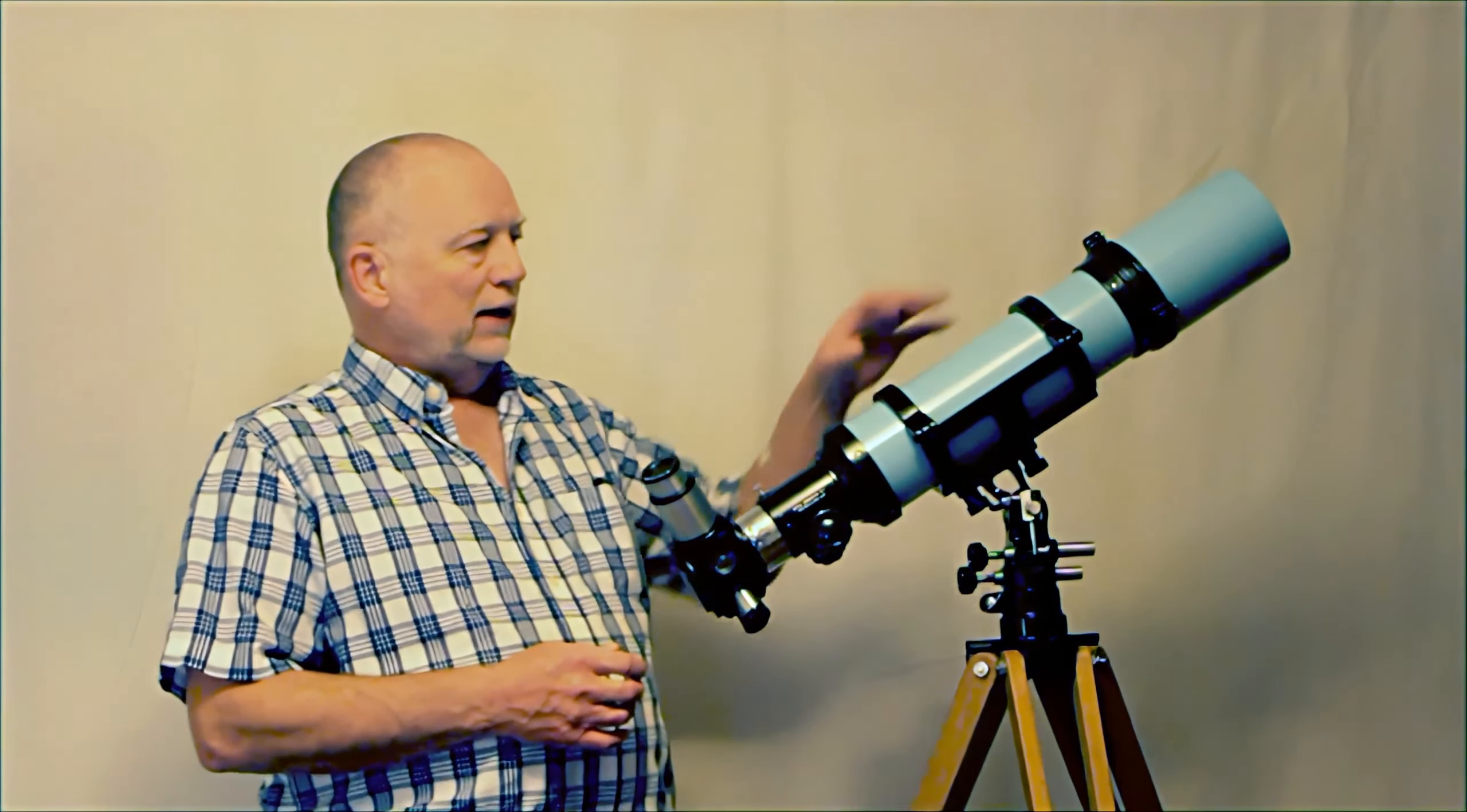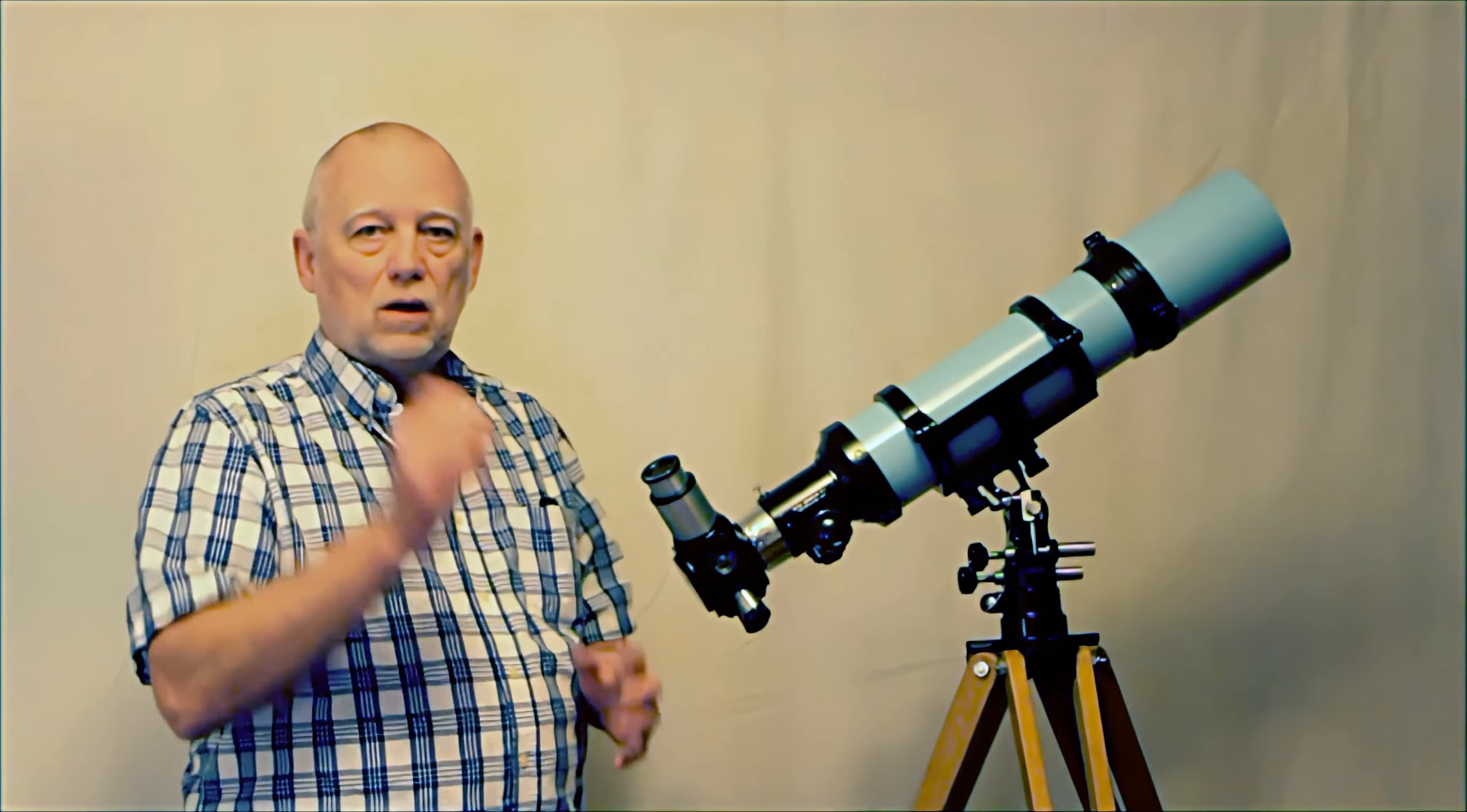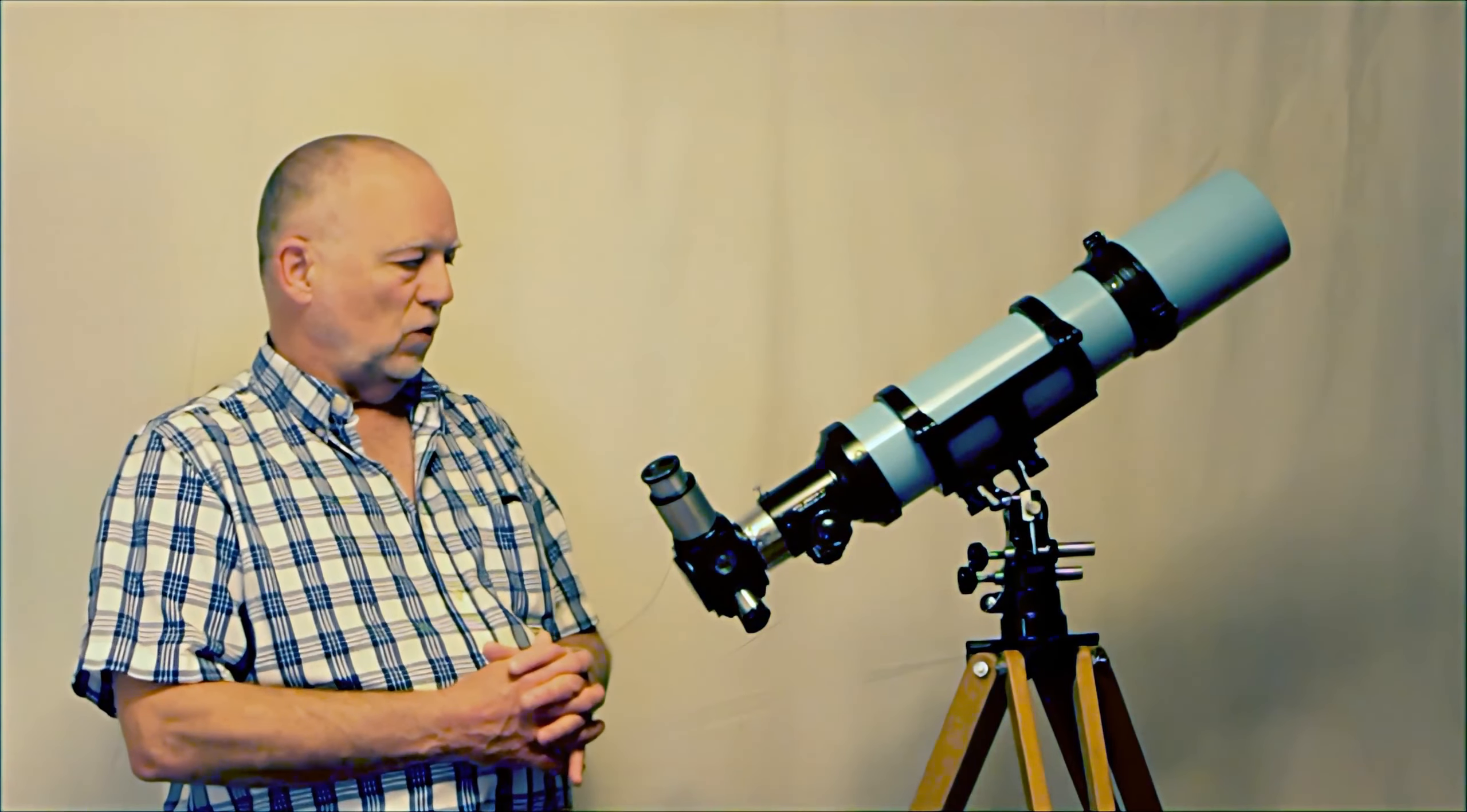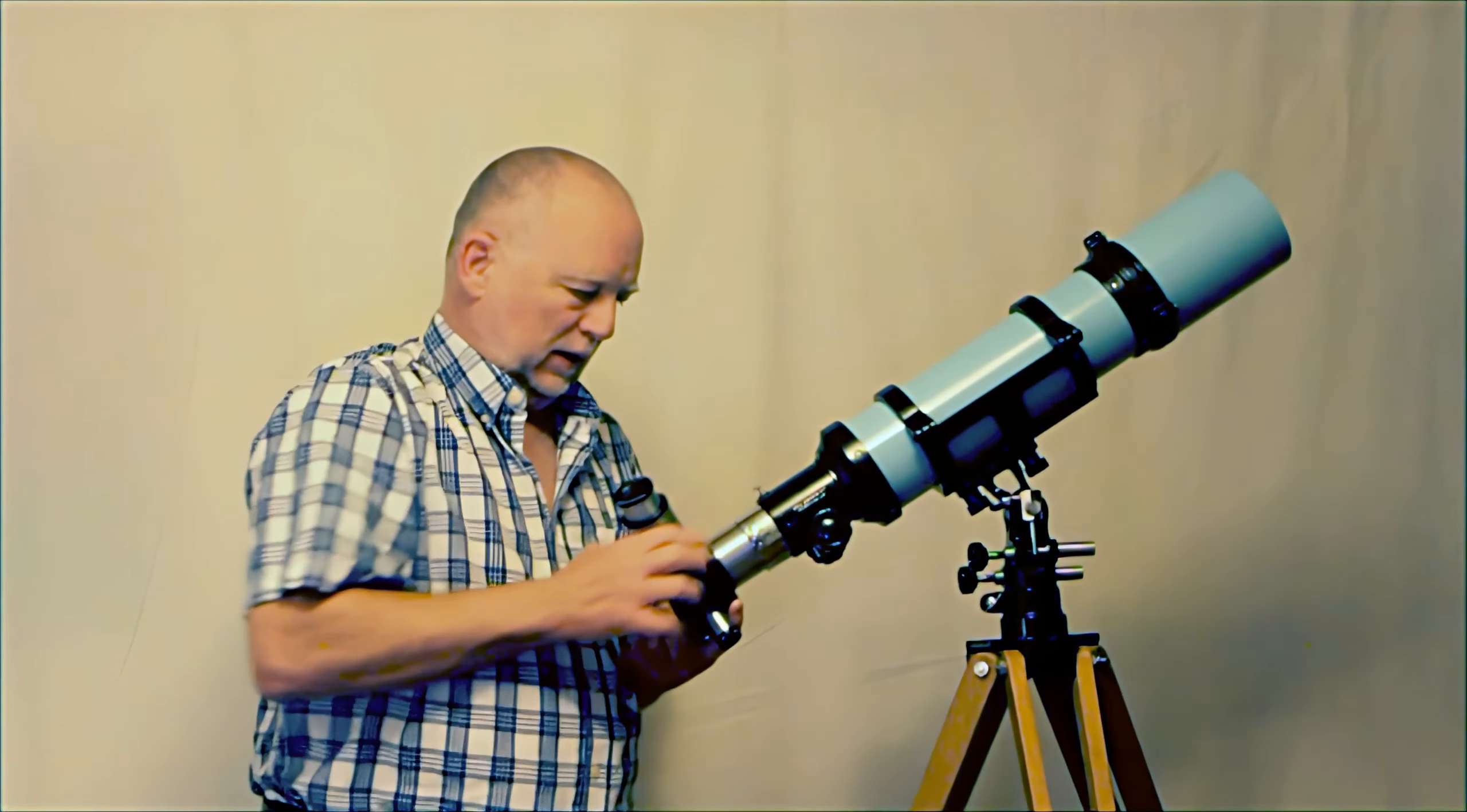The cradle here is also identical to a Unitron 4 inch. The cell here, the objective cell, with the three distinctive adjustment screws is identical to a Unitron 4 inch telescope. The tube diameter here is identical to a Unitron 4 inch. As a matter of fact, I've inserted a Unitron Super Unihex here.